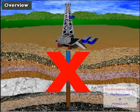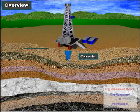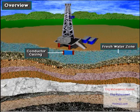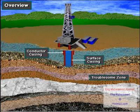Almost always the drilling contractor cannot begin drilling at the surface and go all the way to total depth in one step. For one thing, formations near the surface tend to crumble and cave in easily, so conductor casing prevents cave-ins. For another thing, formations near the surface may also hold fresh water that the well cannot contaminate, so surface casing protects freshwater zones.